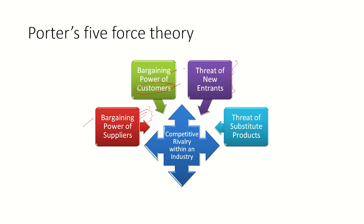Next is a very interesting force — the threat of new entrants. When there are low entry barriers, we can expect a lot of new players coming into the industry. When new players enter, naturally the competition increases and there will be changes in the bargaining power as well, meaning there will be an overall change in the way the industry operates. Companies can stop new entrants by using cost-effective methods of production for a competitive advantage or through patents, but this force always plays a role in the industry.